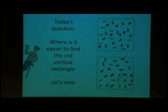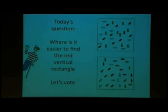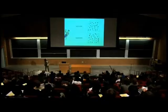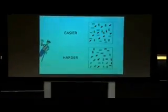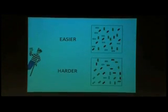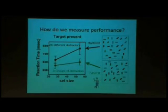Our question is — in this display our target is the red vertical rectangle, so look for the red rectangle. Do you think these two displays are equally hard? Who thinks the top one is going to be easier? Who thinks the bottom one is going to be easier? The people who chose the top one — congratulations, you're a very good prospective cognitive scientist. But our question is not just which one is harder, but also why. How can we explain that? This is not just a matter of a vote — we actually proved it.